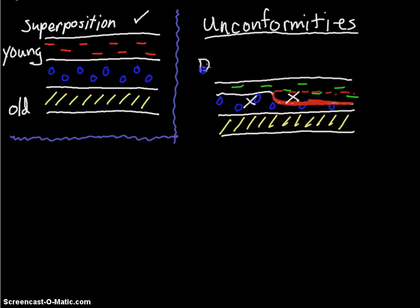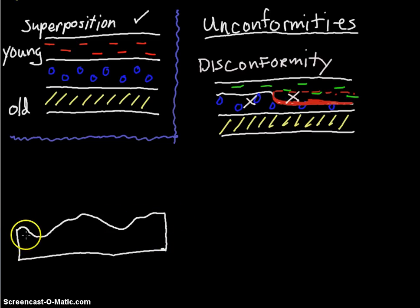This would be called a disconformity. Another one would be if we have metamorphic rock or igneous rock. When that happens, metamorphic rock and igneous rock aren't going to be deposited, they're not going to look very conformed and in order, and it's not going to lay flat like sediment.